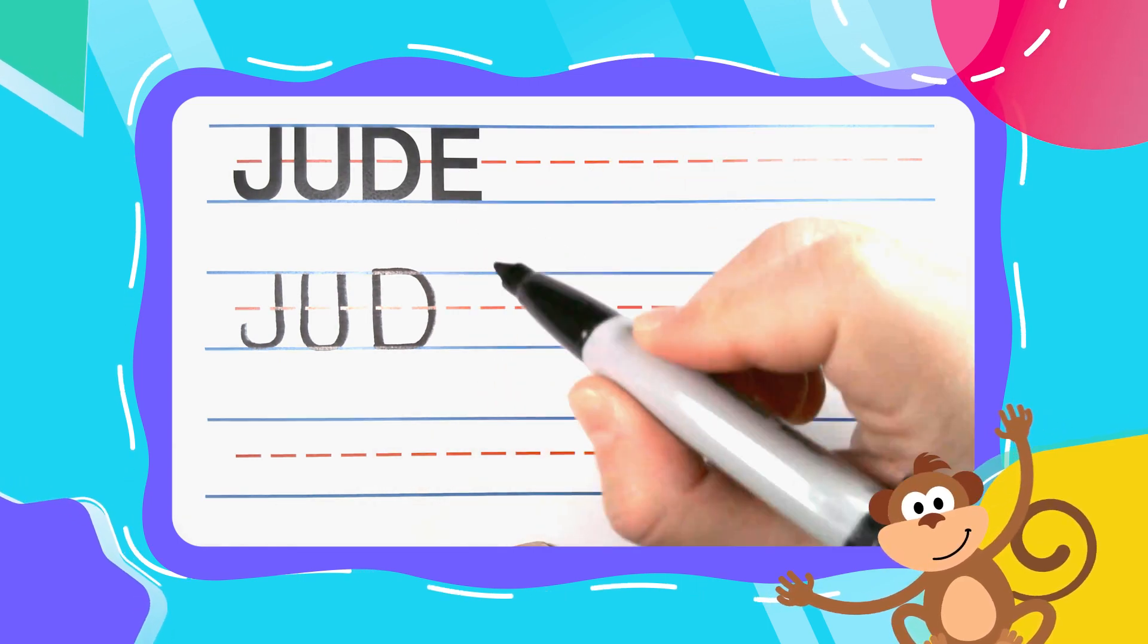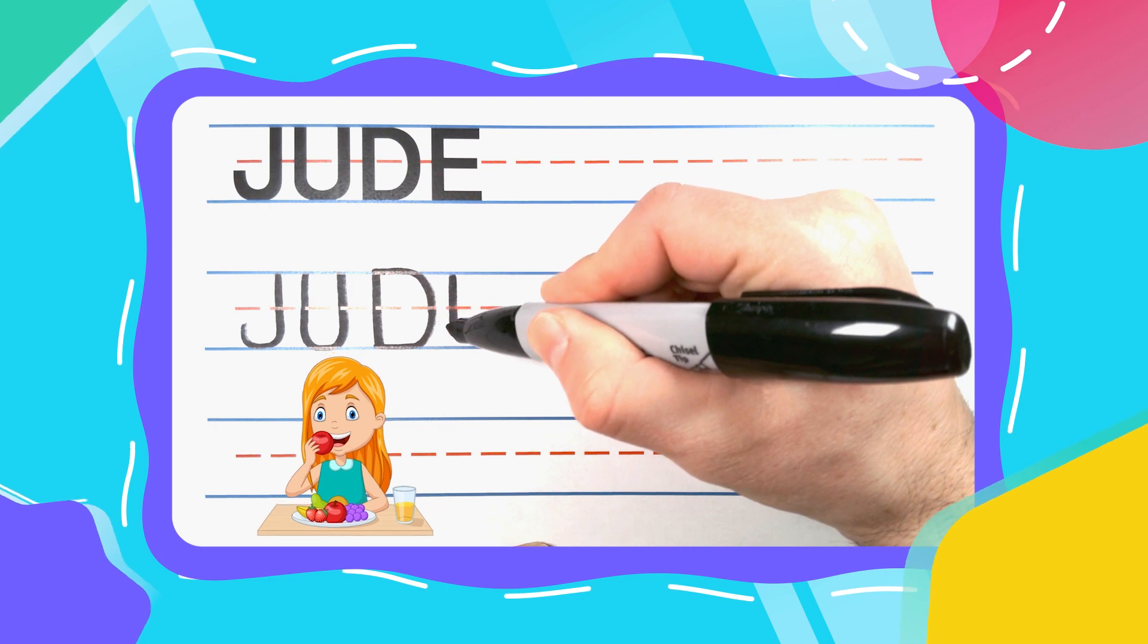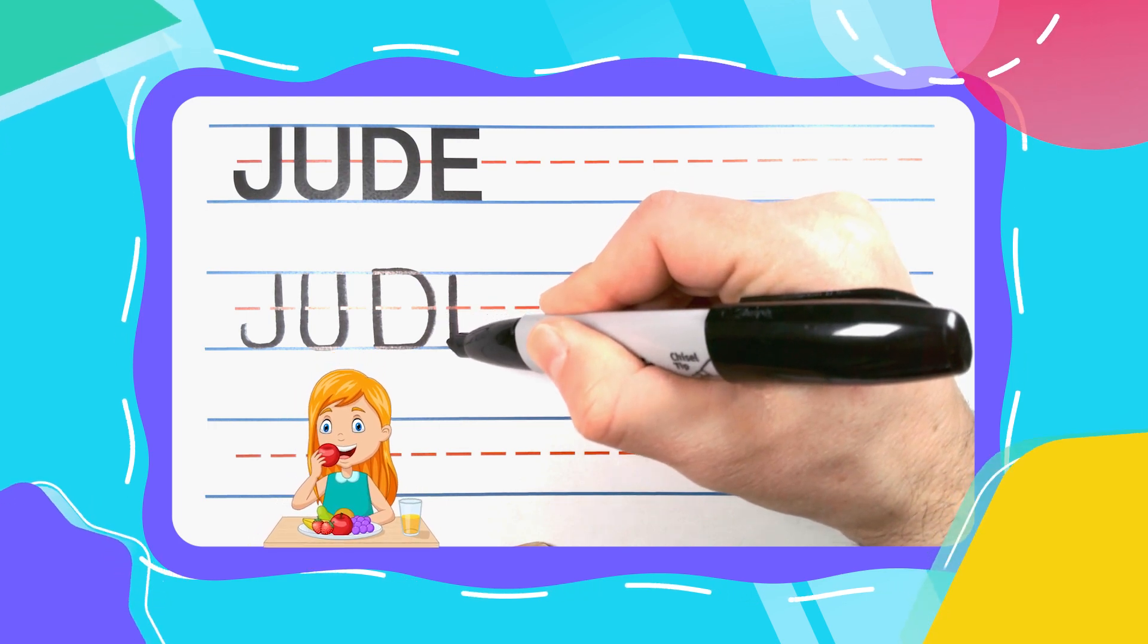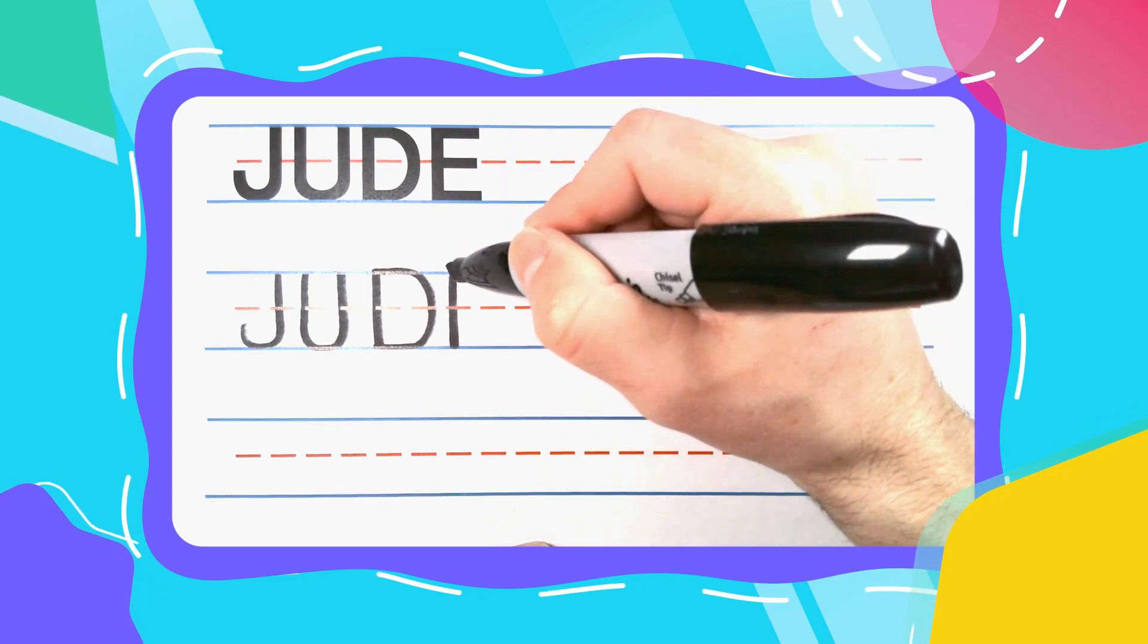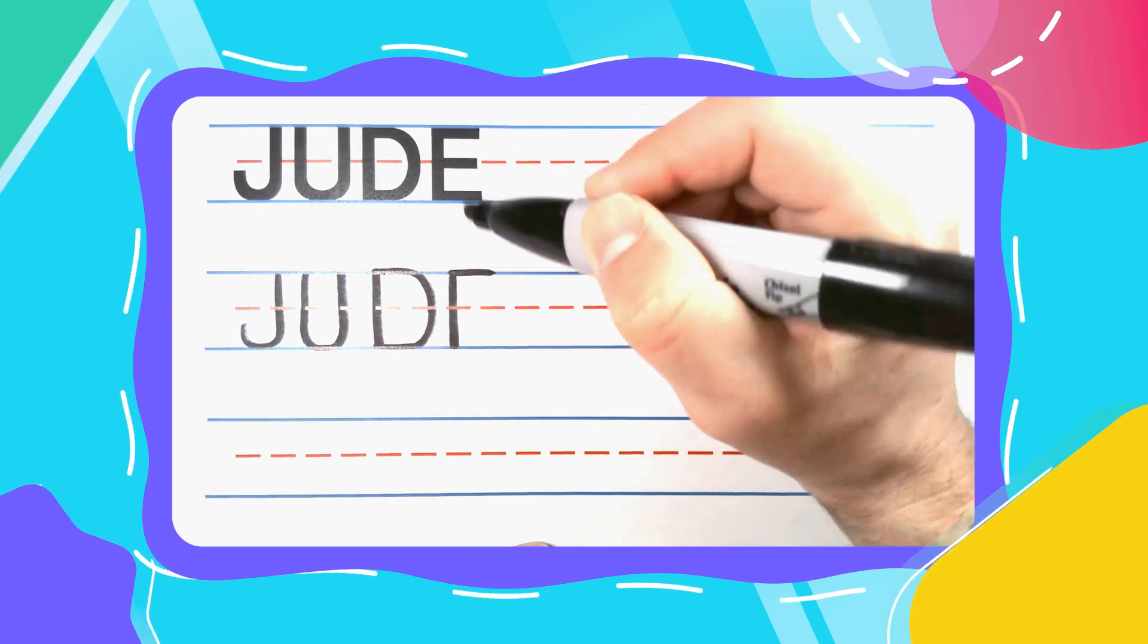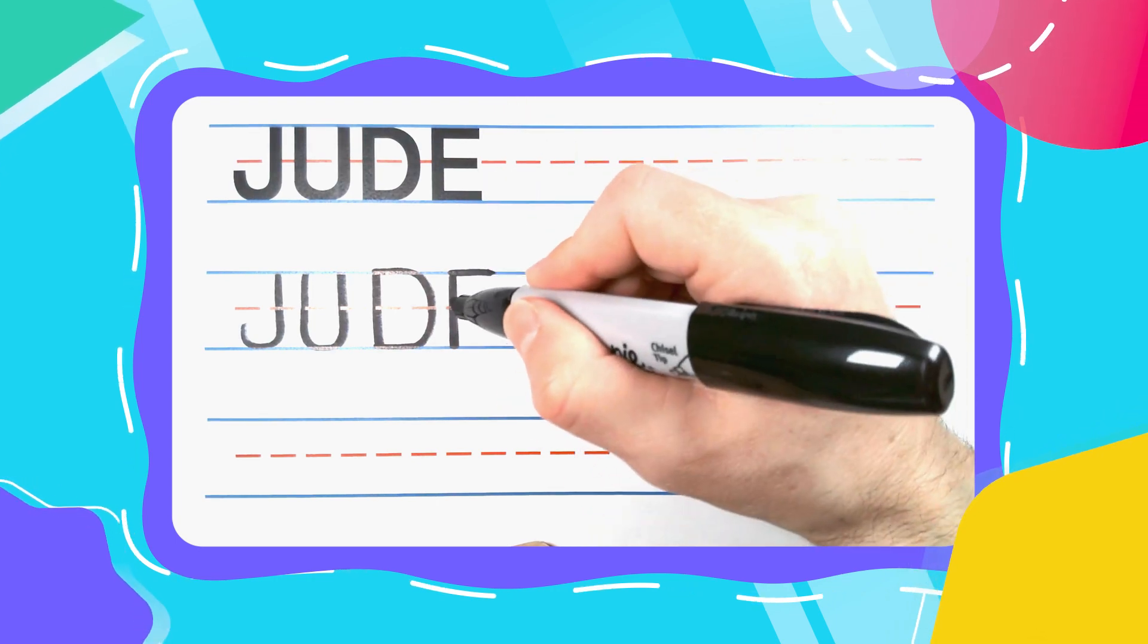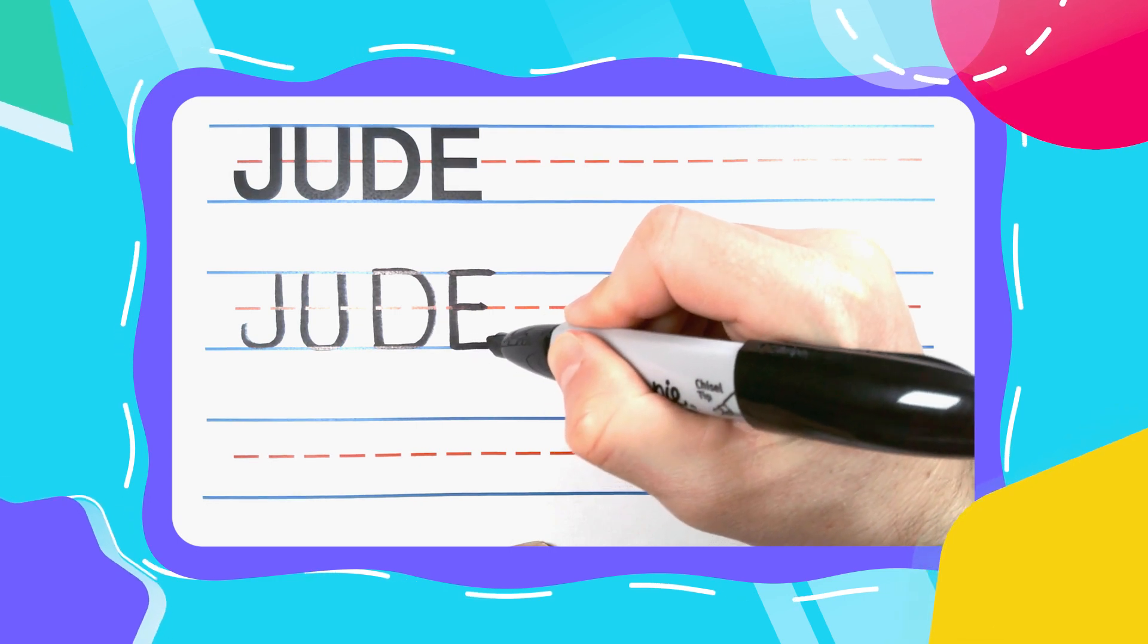Alright friends, let's finish the name Jude with an E. And every E likes to eat. And every E starts with a straight up and down line. Every E also has three left to right lines. A big one at the top. A smaller one in the middle. And another big one down at the bottom.